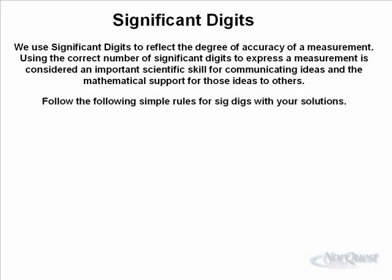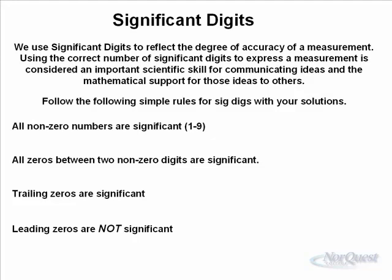So following these simple rules, all non-zero numbers are significant. What that means is any number from 1 to 9 is considered significant. So if you write down a 9, that means something. And all zeros between non-zero numbers are significant. Trailing zeros are significant. And leading zeros are not significant. Now what does all this mean? Well, let's look at a couple of examples.